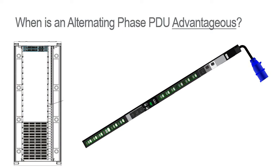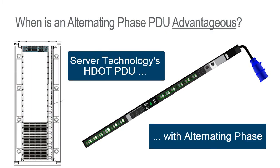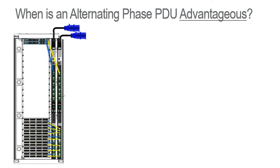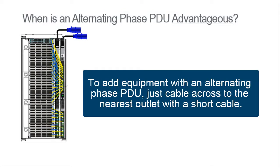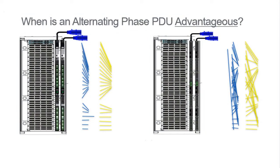Now let's set up the same rack with an alternating-phase PDU, like Server Technology's popular High Density Outlet Technology, or HDOT, and watch what happens with this type of PDU. Remember in our example there was initial deployment of only a third of the rack at the bottom? With the alternating-phase PDU shown here, the rack can achieve balanced loads with shorter cables. As equipment is added, you just need to cable across to the nearest outlet on the PDU with a short cable. Load balancing occurs almost automatically.